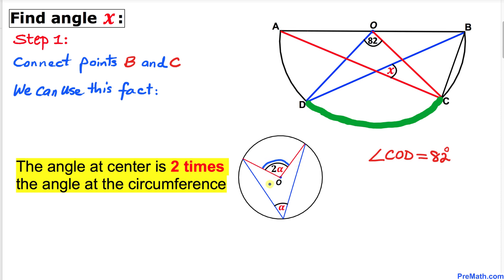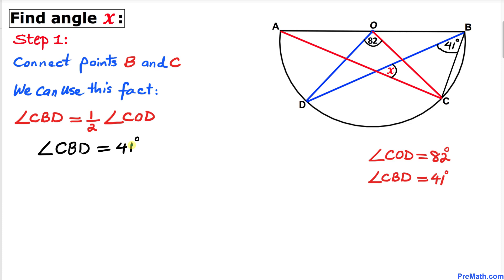Now let's recall this well-known fact: the angle at the center is two times the angle at the circumference. Therefore, in our given problem, this angle 82 degrees is our angle at the center, and angle CBD is our angle at the circumference. Therefore, angle CBD is going to be half of angle COD, which is 82 degrees. So half of this is 41 degrees. Thus, our angle CBD turns out to be 41 degrees.